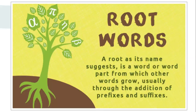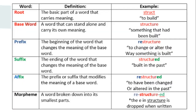So root words. A root, as its name suggests, is a word or word part from which other words grow, usually through the addition of prefixes and suffixes. Root: the definition is the basic word, part of a word that carries meaning. Here's the example: "struct," which means to build.